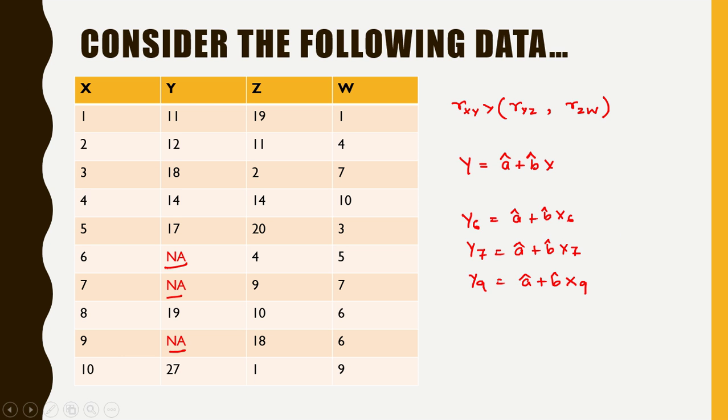The next missing value imputation method that we are going to study is called the KNN imputation. Before we do so we will get a little idea about what the concept of KNN is. In the coming videos we will discuss the concept of KNN or the K nearest neighbor. Hope you enjoyed. Thank you.